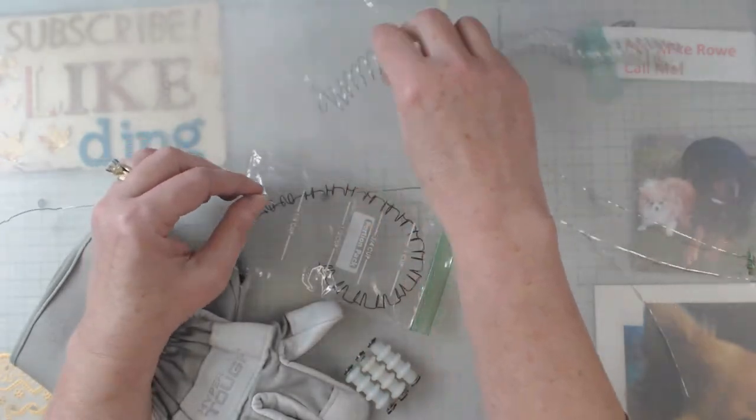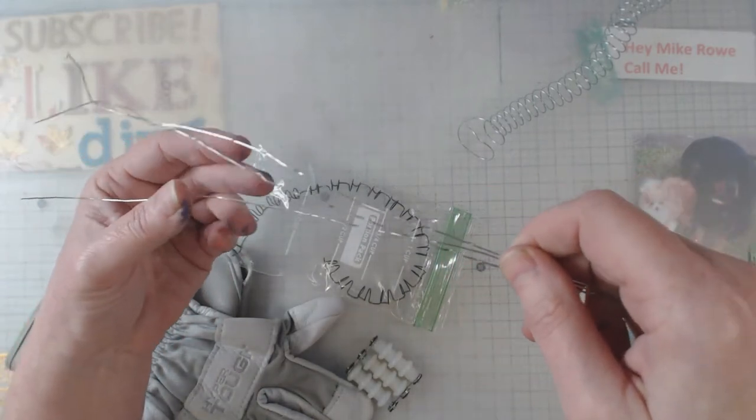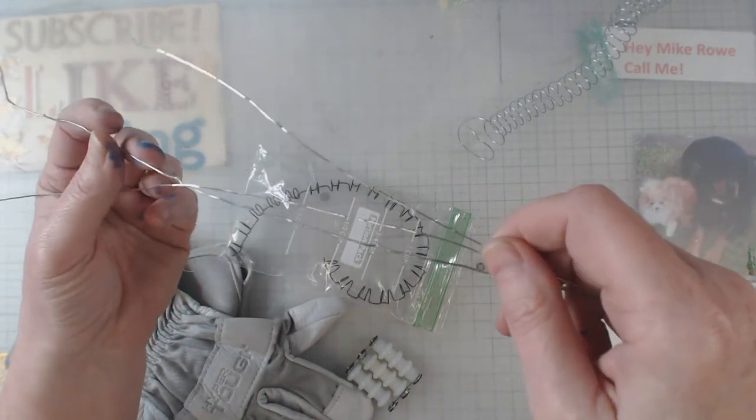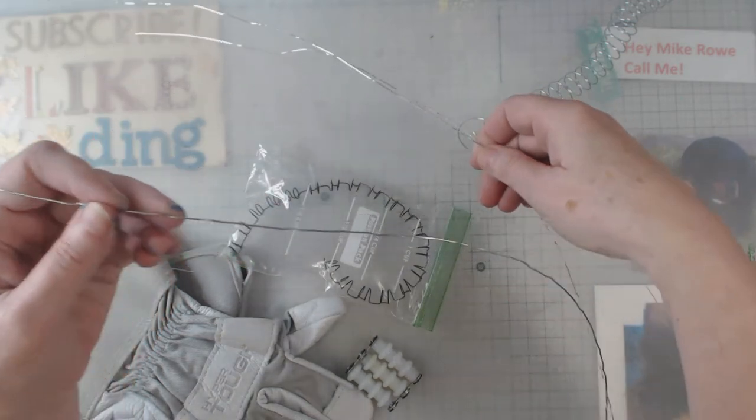What it does is - look at me, I got a tangled mess - what it does is it straightens out wire. Have you ever had wire that gets a kink in it? It's kind of a pain.